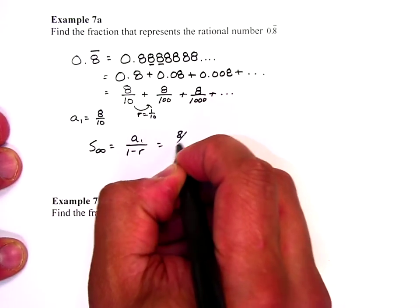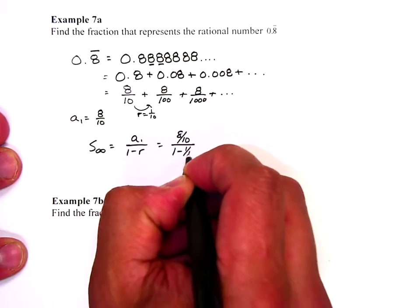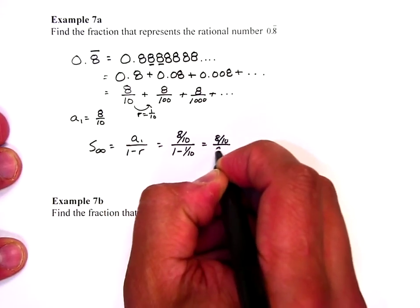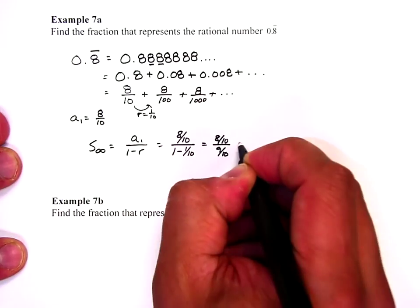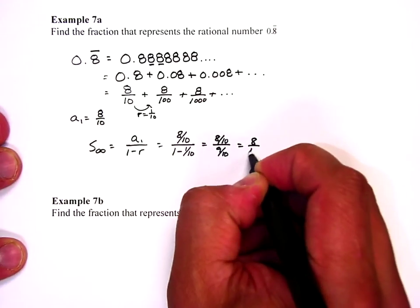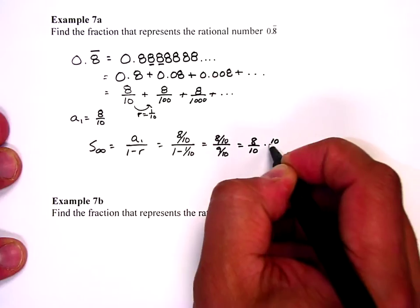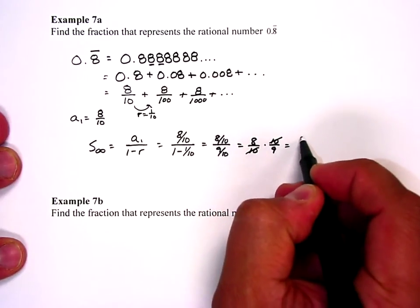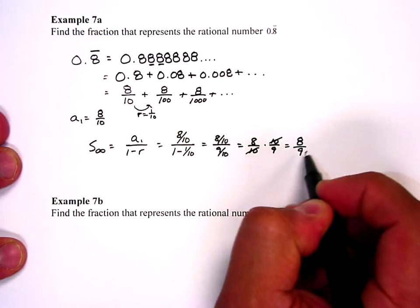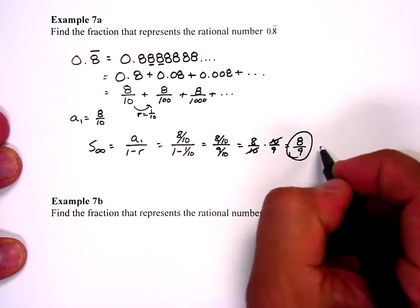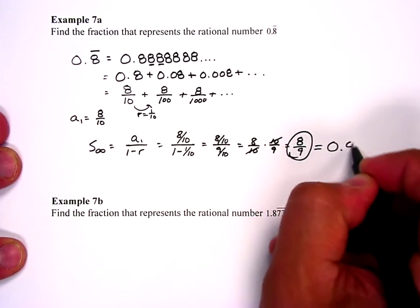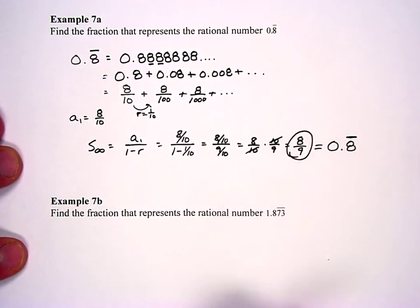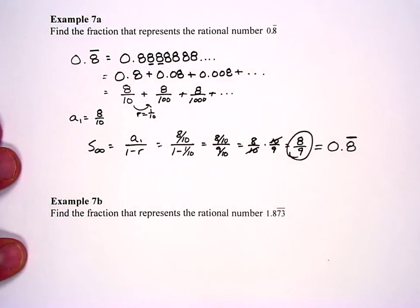It's going to be 8 tenths over 1 minus 1 tenth. So that's 8 tenths divided by 9 tenths. Use our fraction knowledge. The tens cancel and we get 8 ninths. 8 ninths is equivalent to 0.8 repeating. And so that is the fraction that's represented by 0.8 repeating.